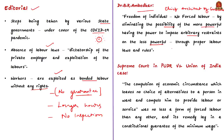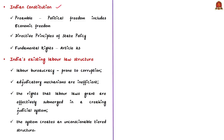There must be no forced labor, and it can be done only through proper labor laws and rules. The Supreme Court of India in P.U.D.R. v. Union of India observed that the compulsion of economic circumstances which leave no choice to a person in want and compel him to provide labor or service was no less a form of forced labor, and its remedy lies in the constitutional guarantee of a minimum wage. Even the preamble of the Indian constitution declared that political freedom must include real economic freedom of the millions.